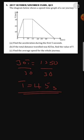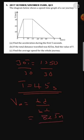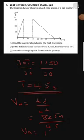Part C says find the average speed for the whole journey. Average speed equals total distance covered over total time taken. Total distance is 825 meters and total time taken is 45 seconds. Dividing gives us an average speed of 18.33 meters per second.